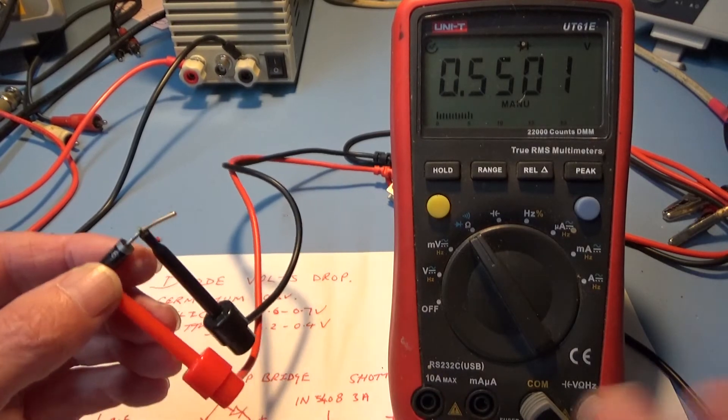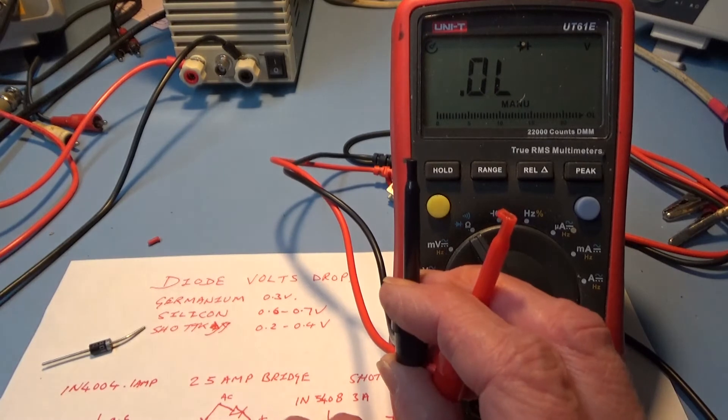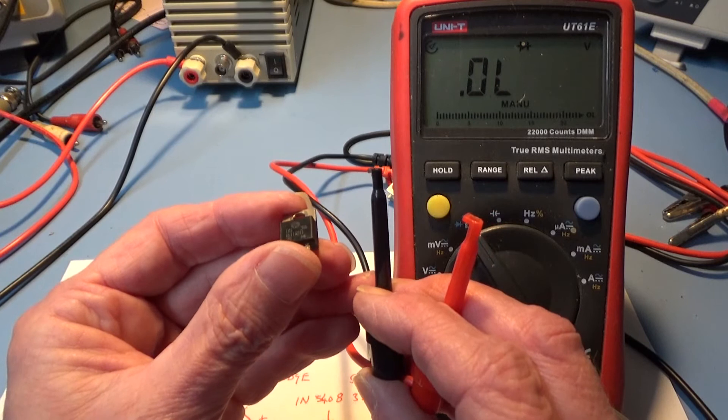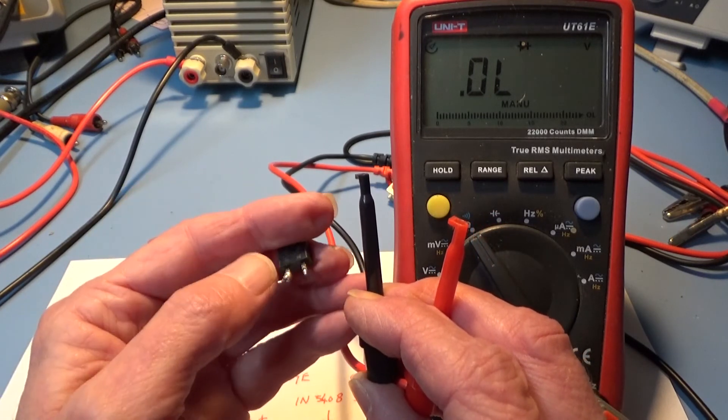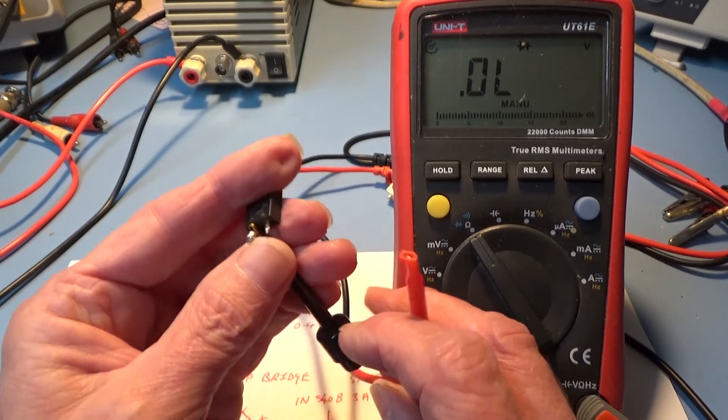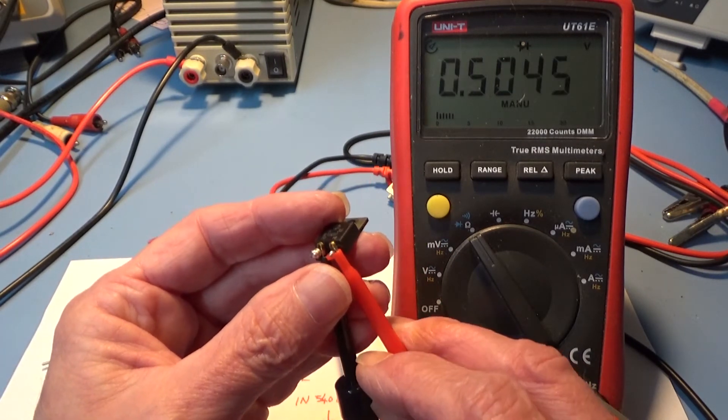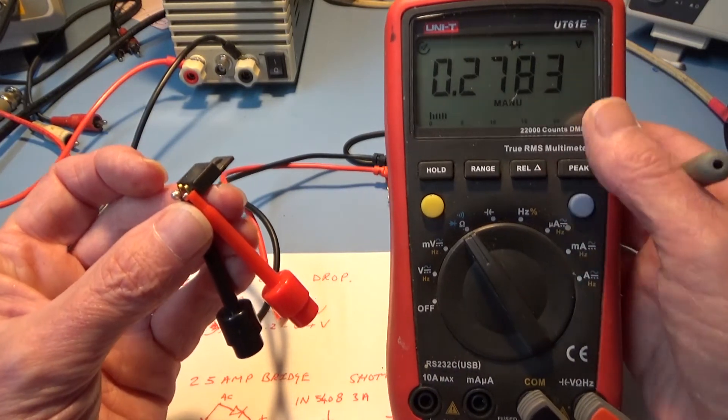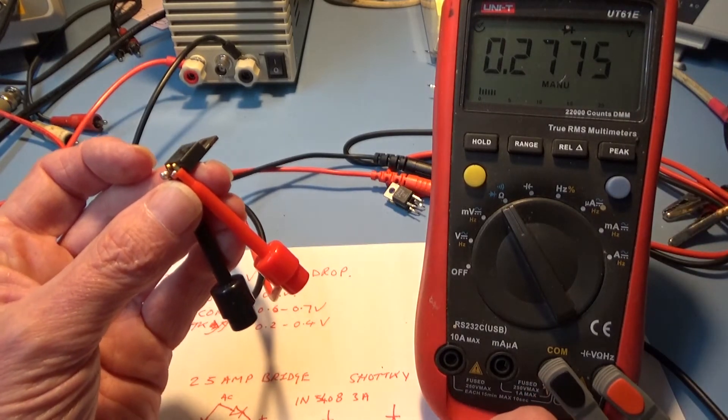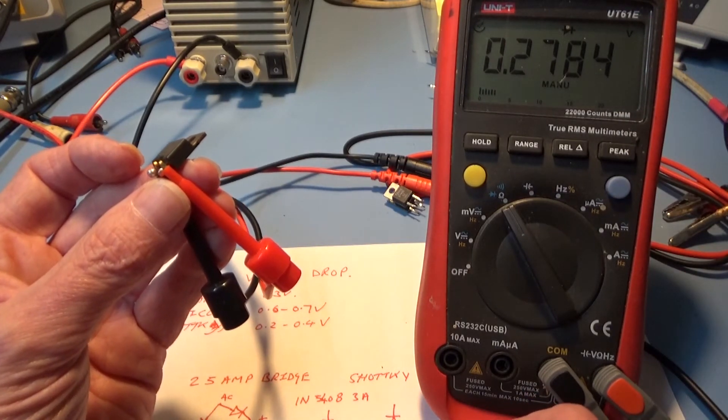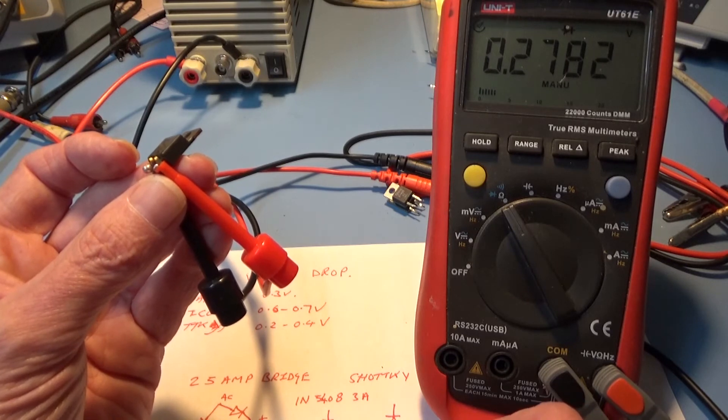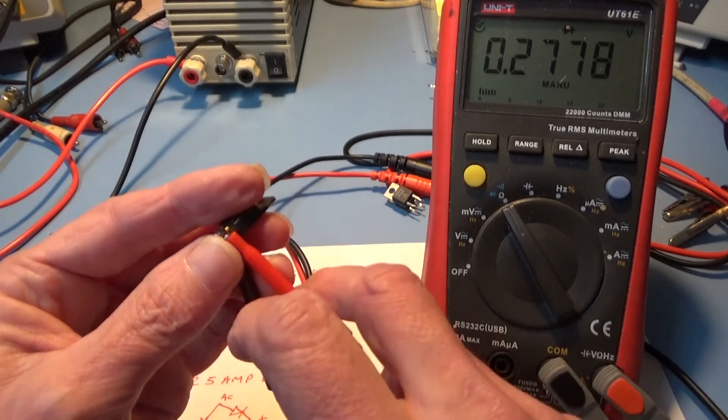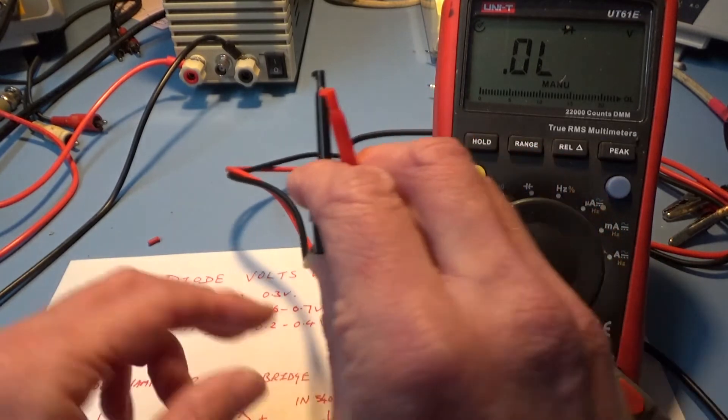Last one is a power Schottky diode. I do know it's 20 amps because I used several of them in a power supply. On that one you get more or less what I expected, 0.27 or call it 0.28 volts. So you think that's exactly what you expect to get on these diodes.